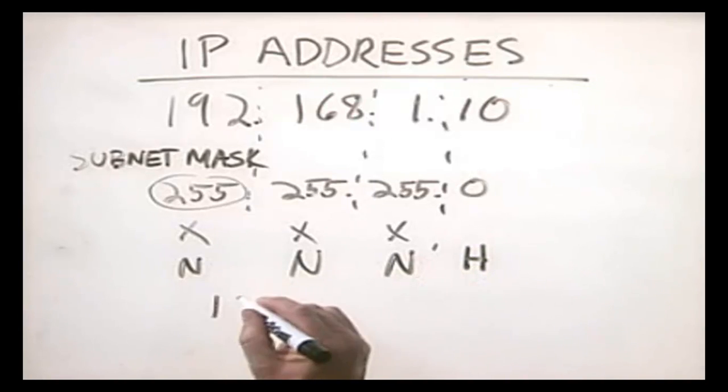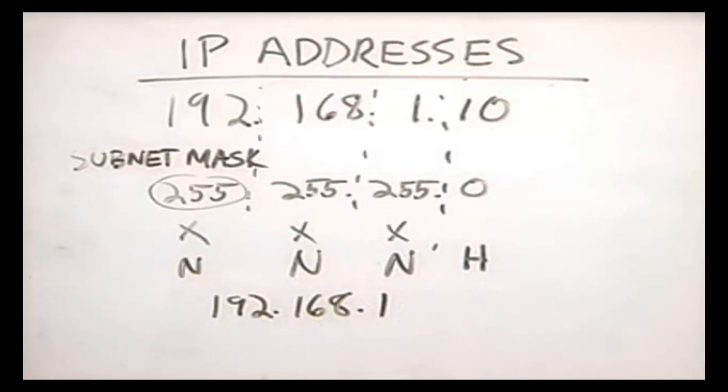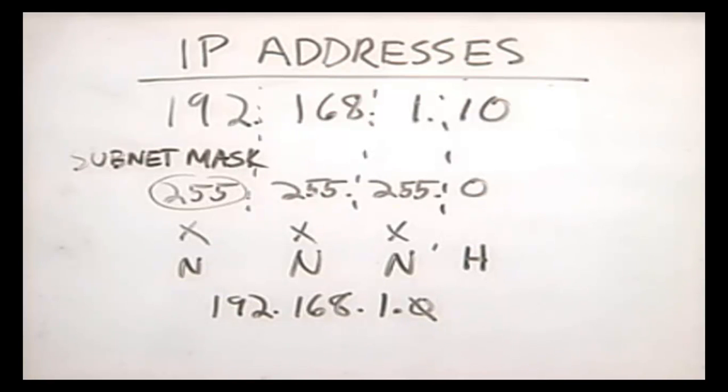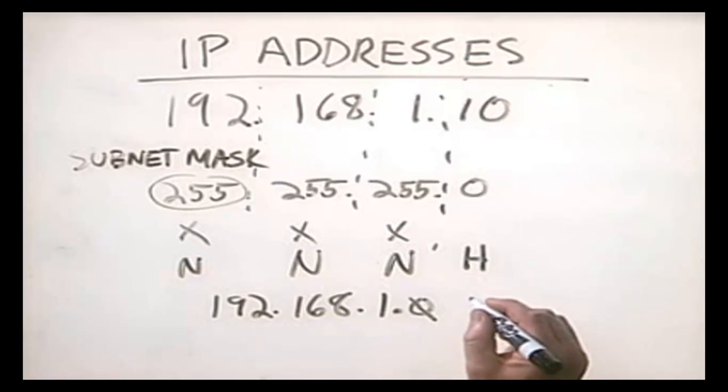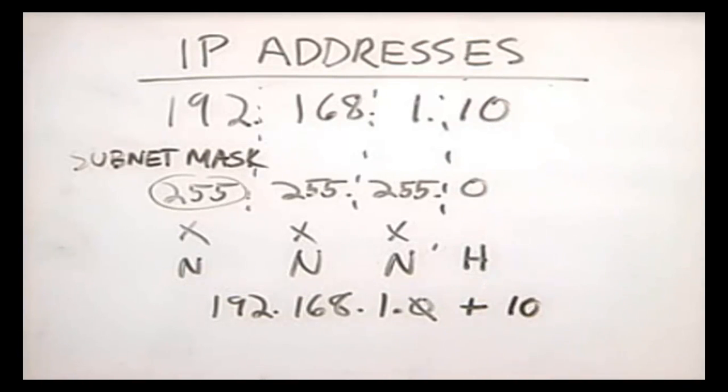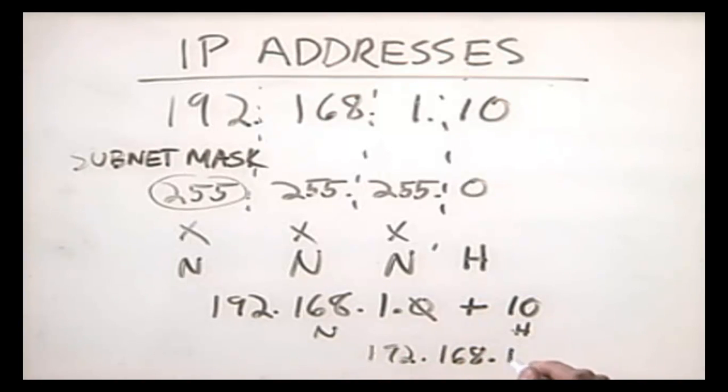What we have here is 192.168.1 as the network address. When dealing with IP, the network address always ends in a zero — any time you see a zero as the last octet, you automatically know that is a network address. We concatenate it with a host address; in this case, 10. So 192.168.1.0 is the network, 10 is the host, and together we get 192.168.1.10. It is also possible to use part of an octet with ones and part with zeros — this is called partial subnetting — but we're not going to get into that here.